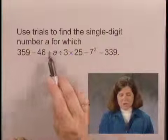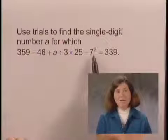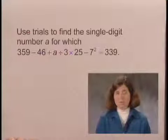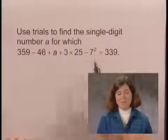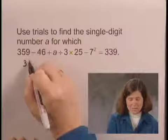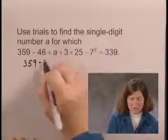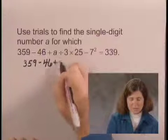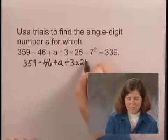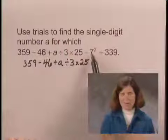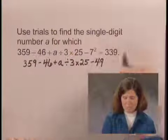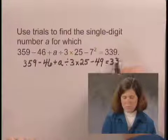If we look through this expression, we find that there is an exponent. So the first thing we need to do according to the rules for order of operations is to simplify that exponential expression. So I will copy the rest of the expression: 359 minus 46 plus A divided by 3 times 25, and I'll evaluate 7 to the second power as 49, minus 49 equals 339.